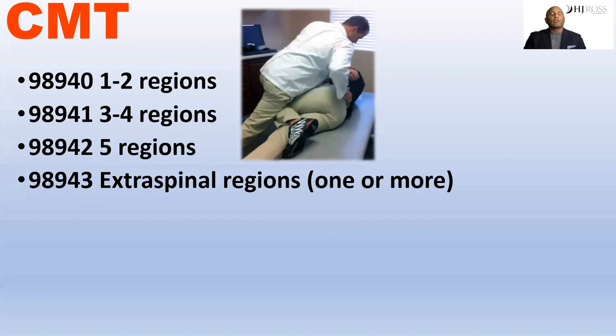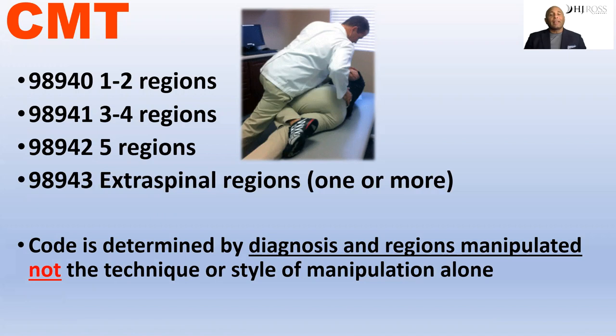Here's the big issue: the use of the code for spinal manipulation is not determined by your technique. The code is determined by the diagnosis and the regions you are manipulating. It's not uncommon that a provider doing a technique such as diversified or Gonstead, maybe even an activator, might adjust the full spine even though the diagnosis is cervical. In that instance, the code to be billed is 98940, regardless of the number of regions manipulated, because that's based on style.